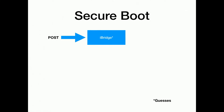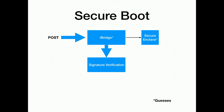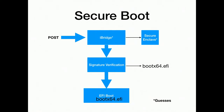Here's how Secure Boot works on the Mac: you turn the computer on and it goes to iBridge — a little version of iOS running inside the Mac, an ARM co-processor. It has a secure enclave that provides certificates to verify the bootloader signature. It does a signature verification on the bootloader, and then hands off to EFI boot, which follows the same process as before. This only applies if you turn on Secure Boot, which you do through the recovery partition. If Secure Boot is off, it just does EFI boot. If it's on, it verifies the certificate on the Windows bootloader.